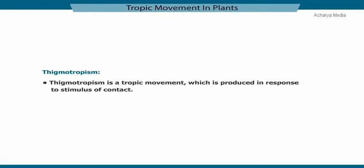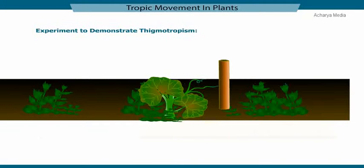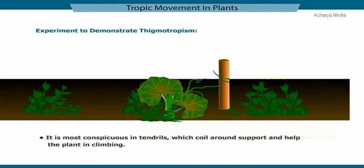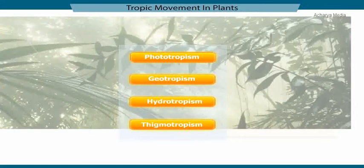Thigmotropism is a tropic movement produced in response to the stimulus of contact. It is most conspicuous in tendrils, which coil around a support and help the plant in climbing. The important tropic movements are phototropism, geotropism, hydrotropism, and thigmotropism.